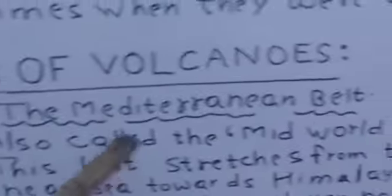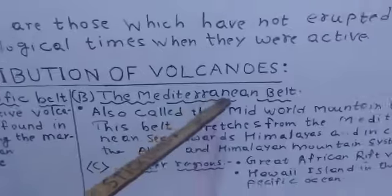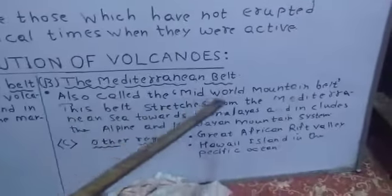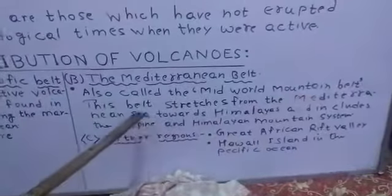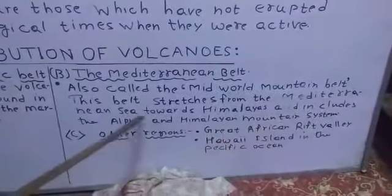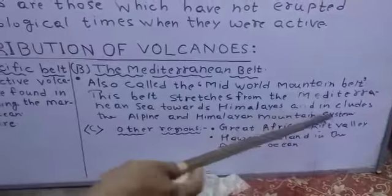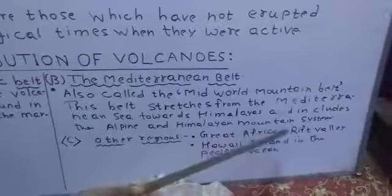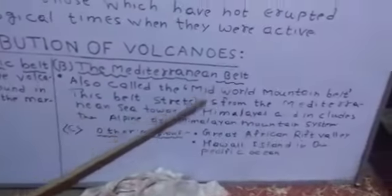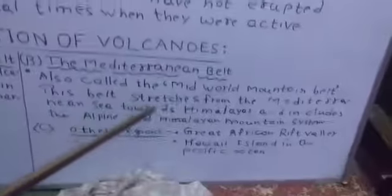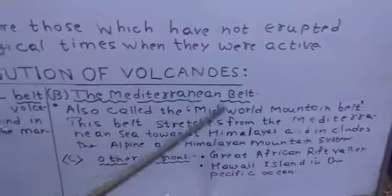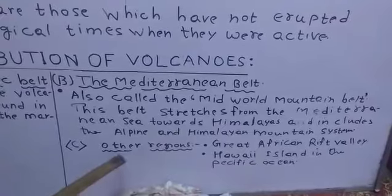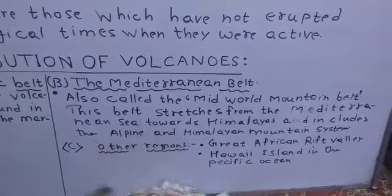The next is the Mediterranean belt. As its name suggests, this belt is associated with the Mediterranean region, also called the mid-world mountain belt. This belt stretches from the Mediterranean Sea towards the Himalayas and includes the Alpine and Himalayan mountain systems. This is also a wide volcano belt.